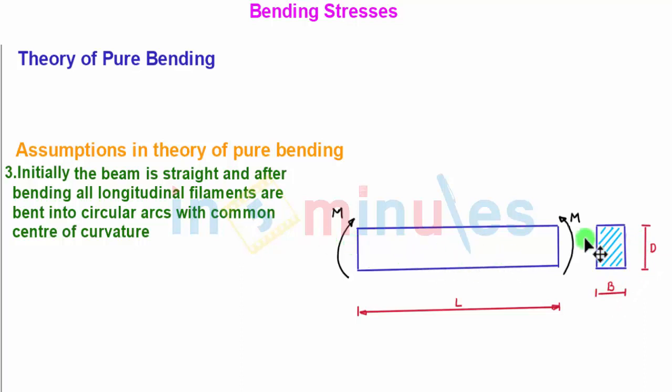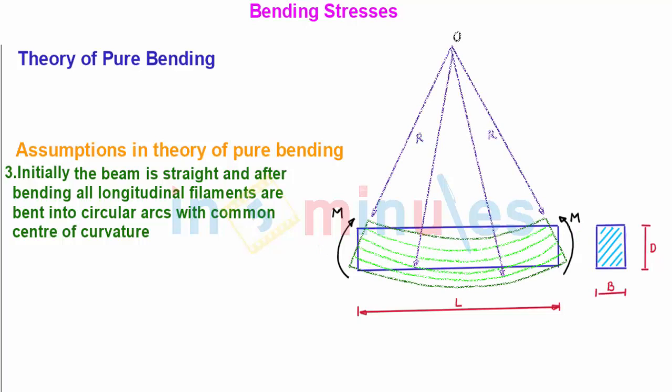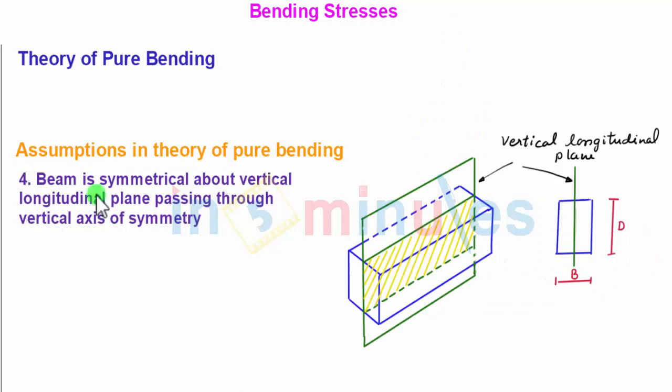When bending moment M is applied on the beam, the beam bends into a circular arc and all the longitudinal filaments, which are very thin filaments, are bent into circular arcs with common center of curvature at point O.